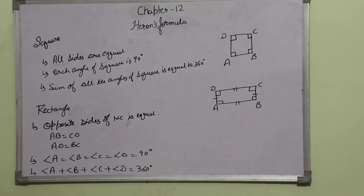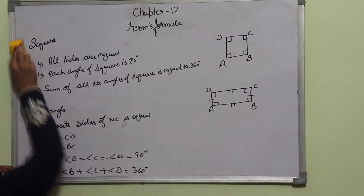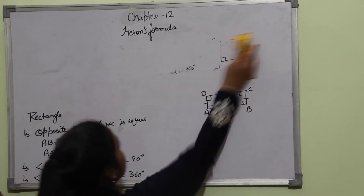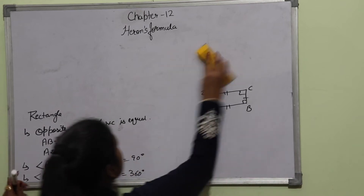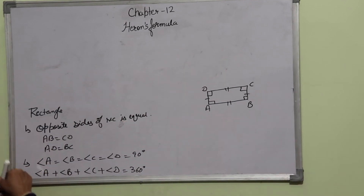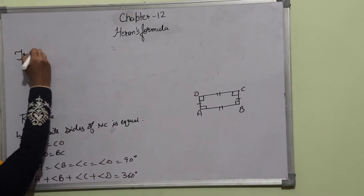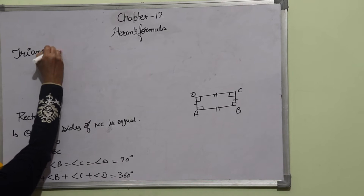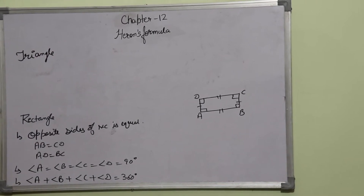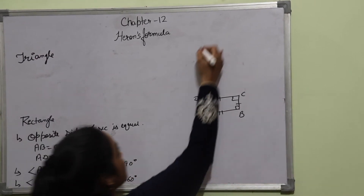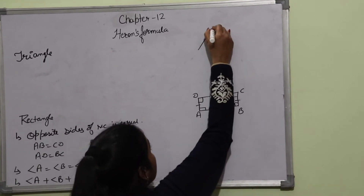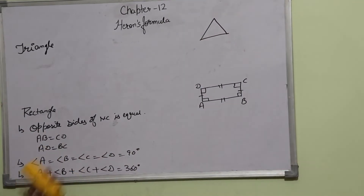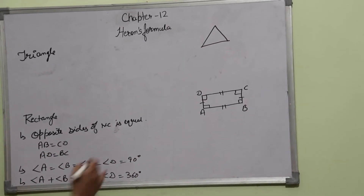Now, we have many types of triangles. We will discuss, first of all, the equilateral triangle.